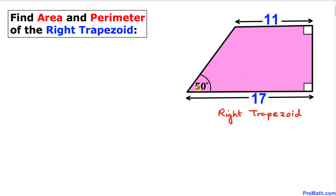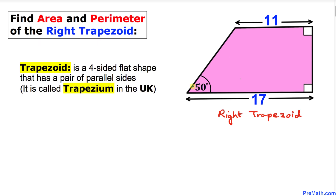Welcome to PreMath. In this video tutorial we have got a right trapezoid as you can see in this figure, and we are going to calculate the area and the perimeter. A trapezoid is a four-sided flat shape that has a pair of parallel sides, and this is a right trapezoid because we have this 90-degree angle.